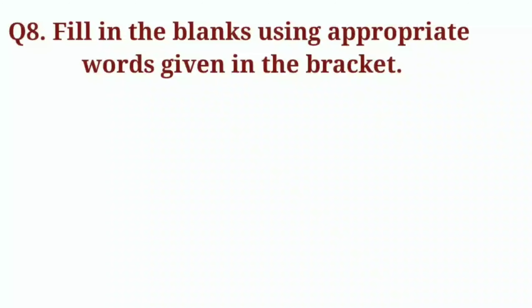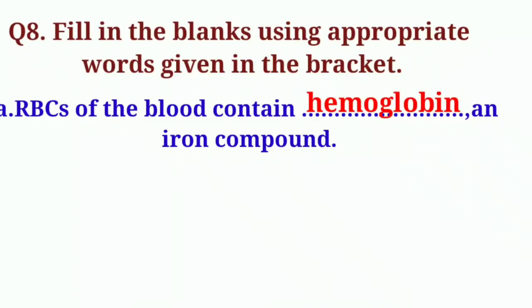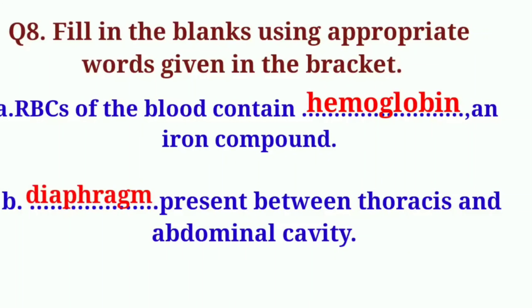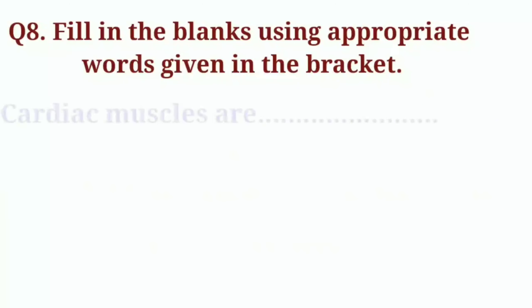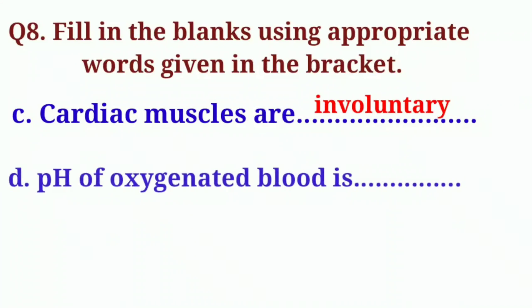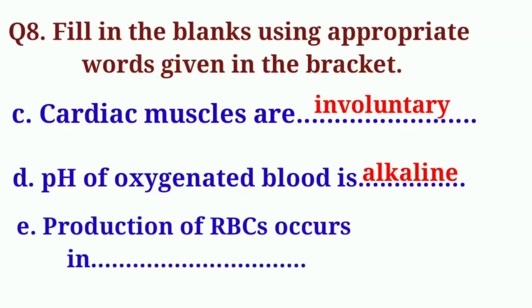Question 8 – Fill in the blanks: A – RBCs of the blood contain hemoglobin, an iron compound. B – Diaphragm is present between the thoracic and abdominal cavity. C – Cardiac muscles are involuntary. D – pH of oxygenated blood is alkaline. E – Production of RBCs occurs in red bone marrow.